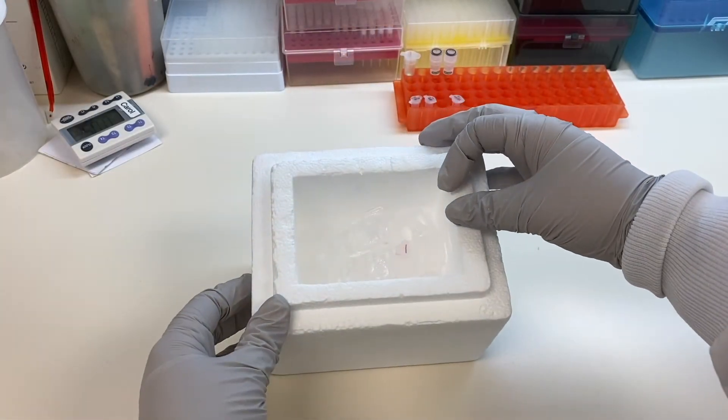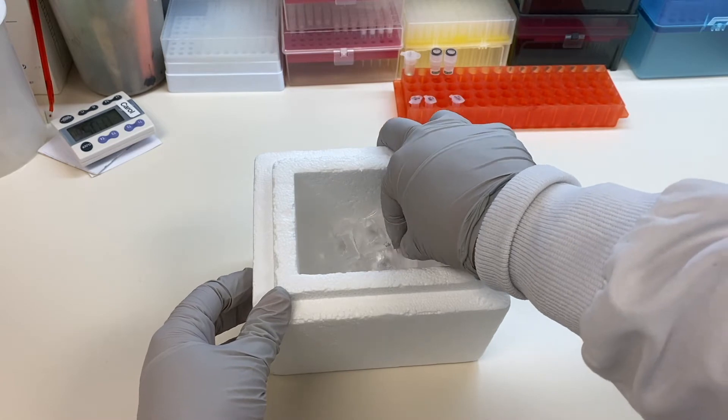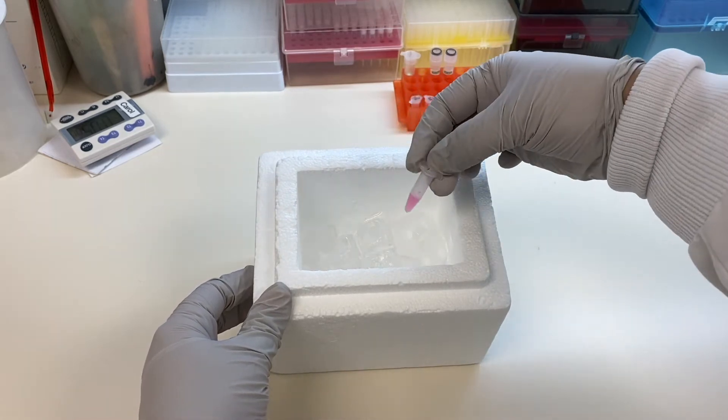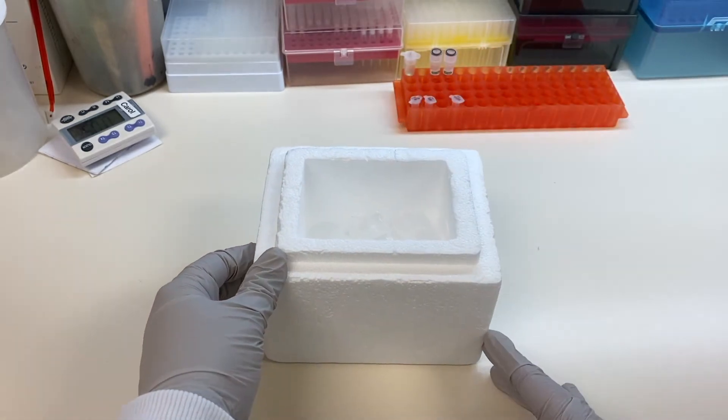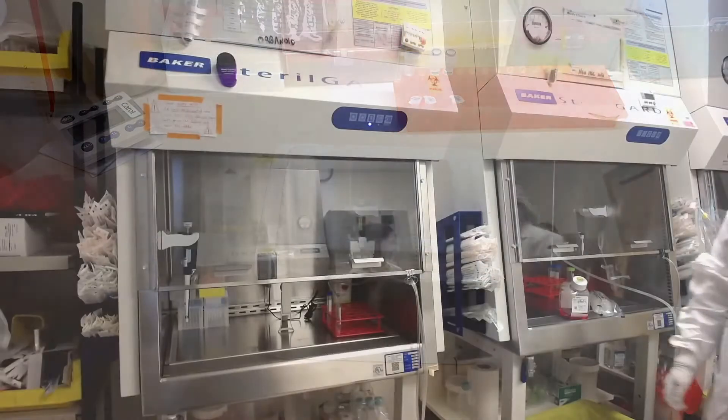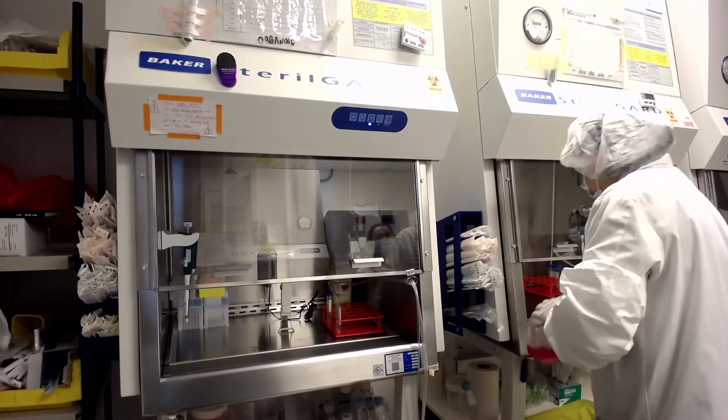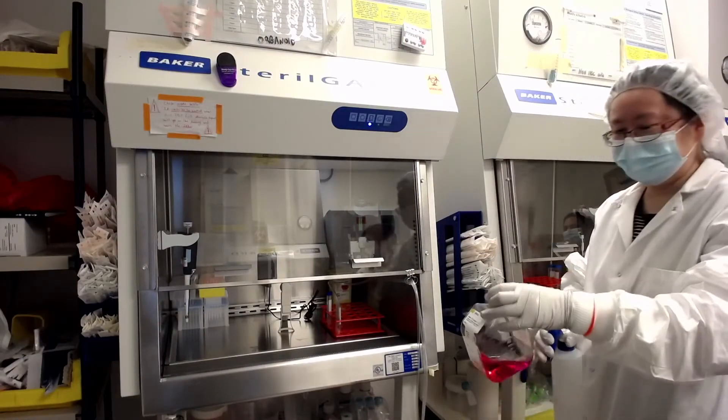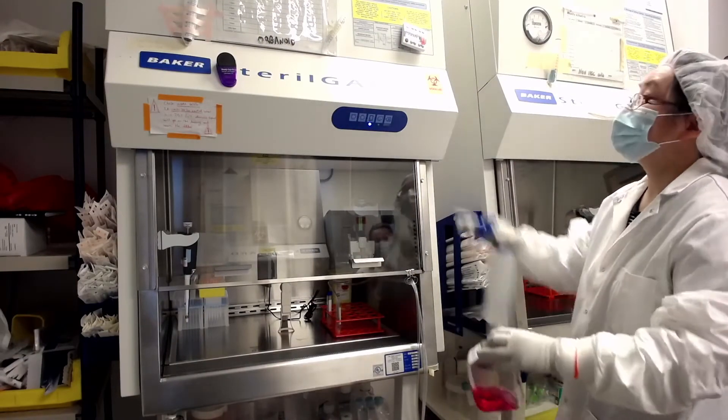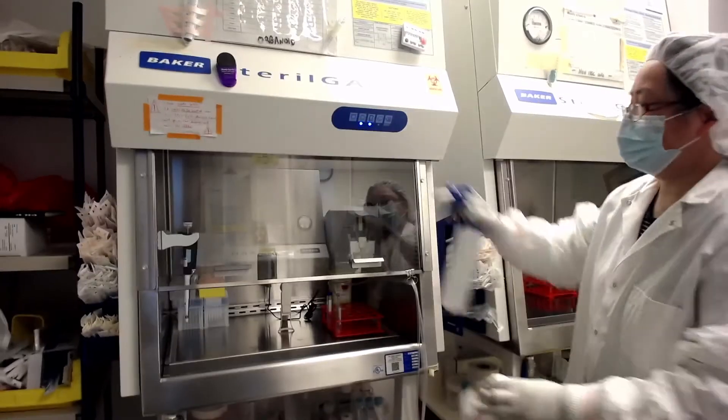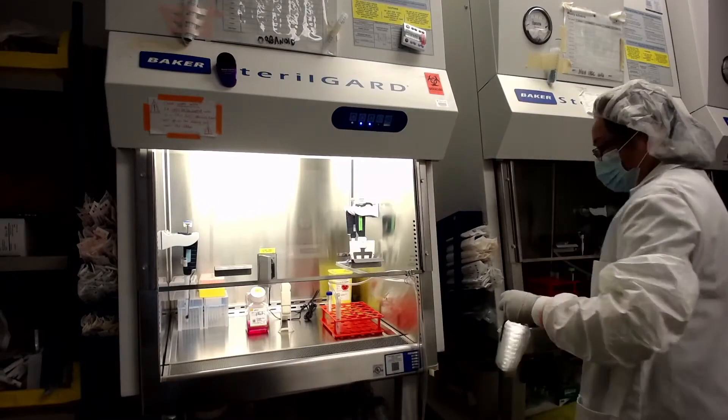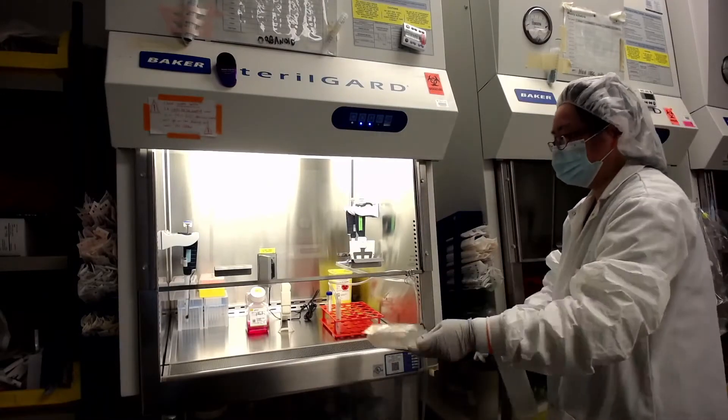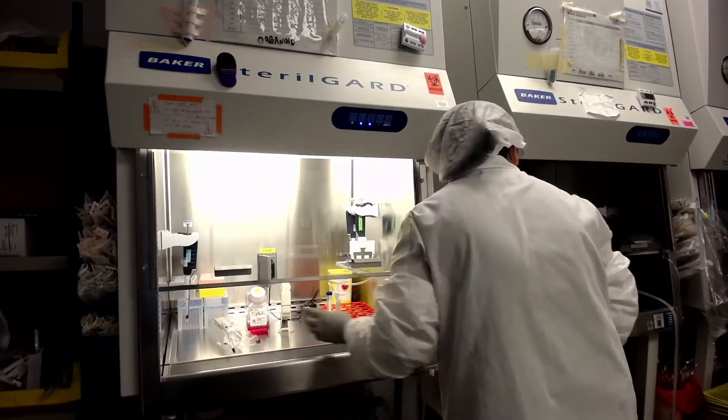Place the icebox inside the BSC. Here is the matrigel aliquot. Transfer cold DMEM with antibiotic and antimycotic and the appropriate sterile culture dishes to the biosafety cabinet. Make sure to spray everything with 70% ethanol to maintain sterile conditions.